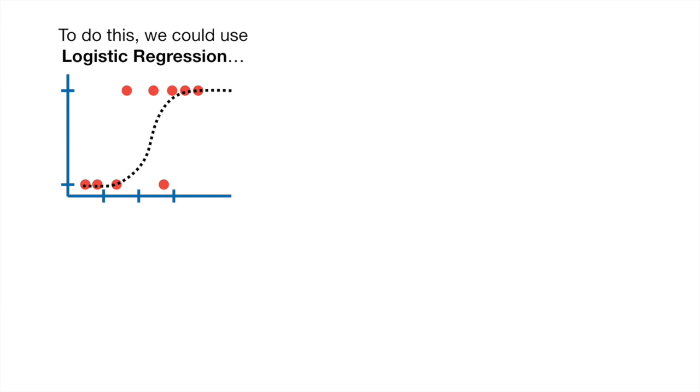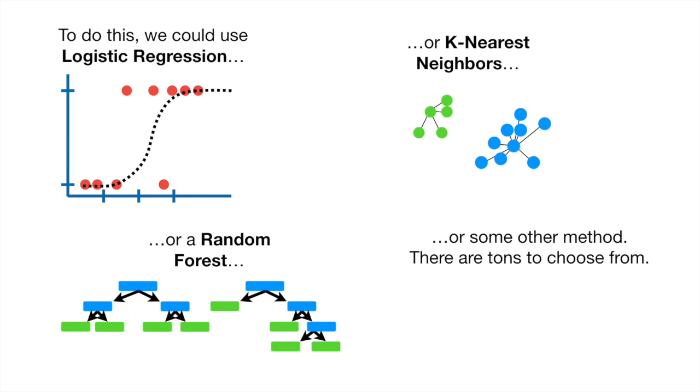To do this, we could use logistic regression, or k-nearest neighbors, or a random forest, or some other method. There are tons to choose from. How do we decide which one works best with our data?